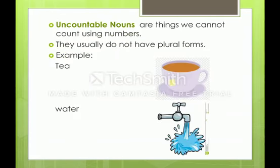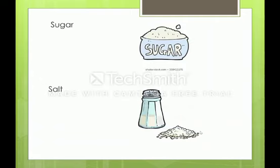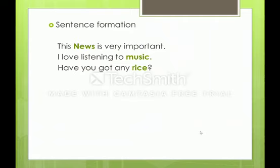Now, uncountable nouns. Uncountable nouns are things we cannot count using numbers, and they usually do not have plural forms. For example, can you count tea, water, sugar, or salt? No, we cannot. In sentences: 'This news is very important,' 'I love listening to music,' 'Have you got any rice?' — we cannot count news, music, or rice. These are all uncountable nouns.